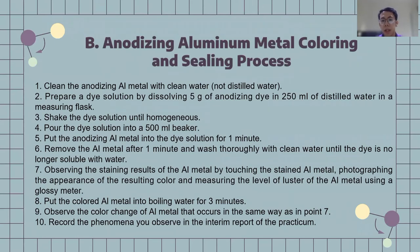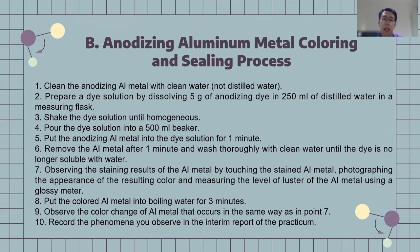Anodizing aluminum metal coloring and sealing process: first, clean the anodized aluminum metal with clean water, not distilled water. Then prepare a dye solution by dissolving 5g of anodizing dye in 250 ml of distilled water in a measuring flask. Shake the dye solution until homogenous and pour it into a 500 ml beaker glass. Put the anodized aluminum metal in the dye solution for one minute, then wash thoroughly with clean water until the dye is no longer soluble with water, because if the dye is soluble with water it will vanish.